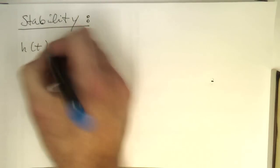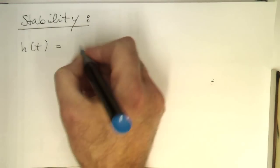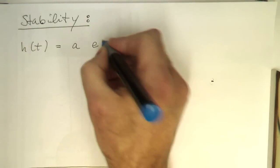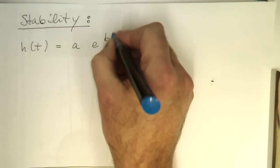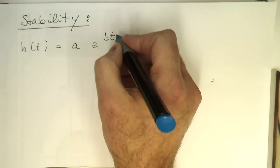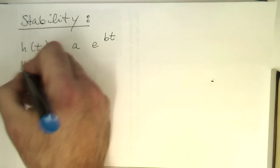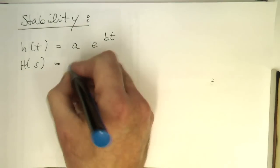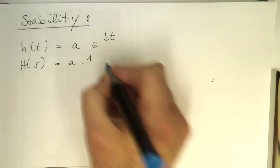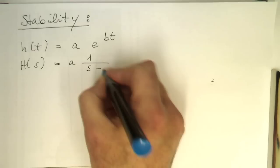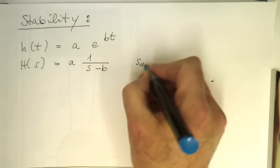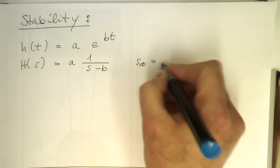If we come back to our analog function here, a e to bt, and this was H(s) was a and then 1 over s minus b. This means that our s infinity, so our pole is at b.